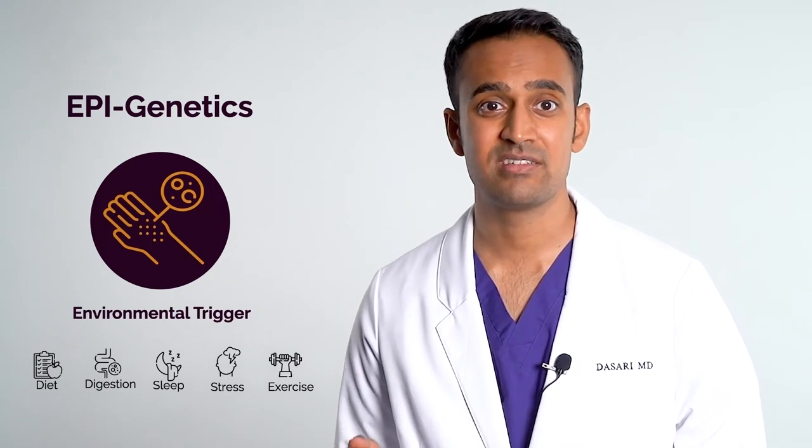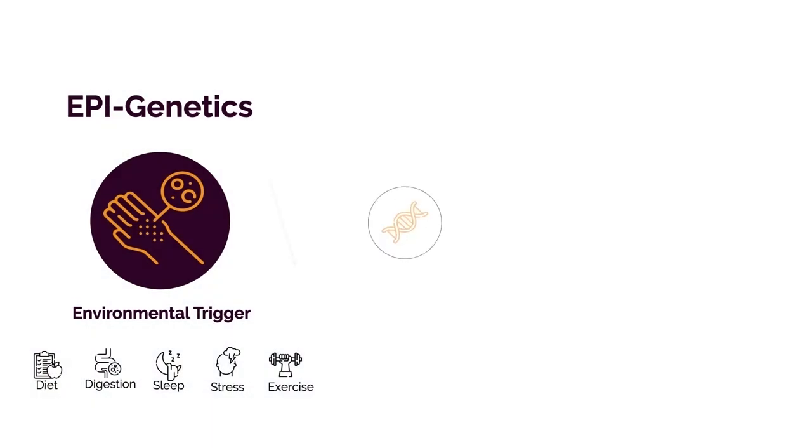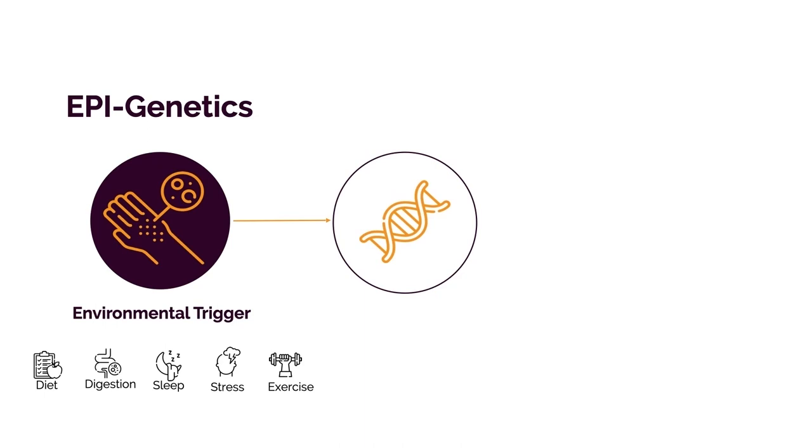These triggers are diet, digestion, sleep, stress, and exercise — the Big Five. These environmental triggers are collectively referred to as epigenetics. The prefix 'epi' denotes a higher position because epigenetics control genetics. It's epigenetics, not genetics, that really matters, because these are all things within our control that can directly impact how much inflammation we have in our body. This approach is designed to leverage these five key elements and maximize them in order to heal the body.